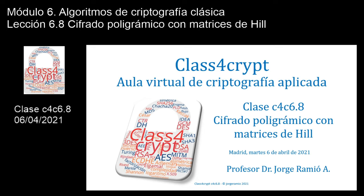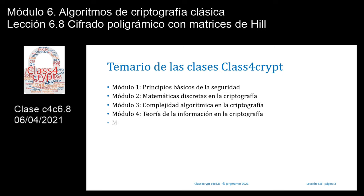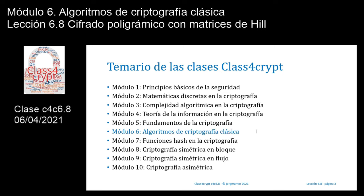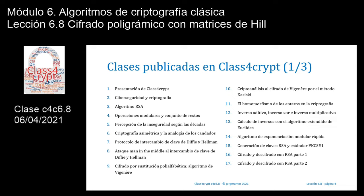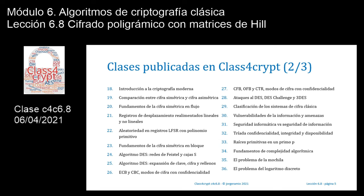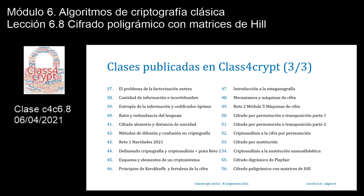Bienvenidos a Class4Crypt, tu aula virtual de criptografía aplicada. Clase número 6.8, cifrado poligrámico con matrices de Hill. Esta clase pertenece al módulo 6 dedicado a los algoritmos de criptografía clásica. Te muestro los títulos de las lecciones ya publicadas en este canal Class4Crypt, siendo la lección de hoy la número 56, superando a fecha de hoy, 6 de abril de 2021, las 35.500 visualizaciones.